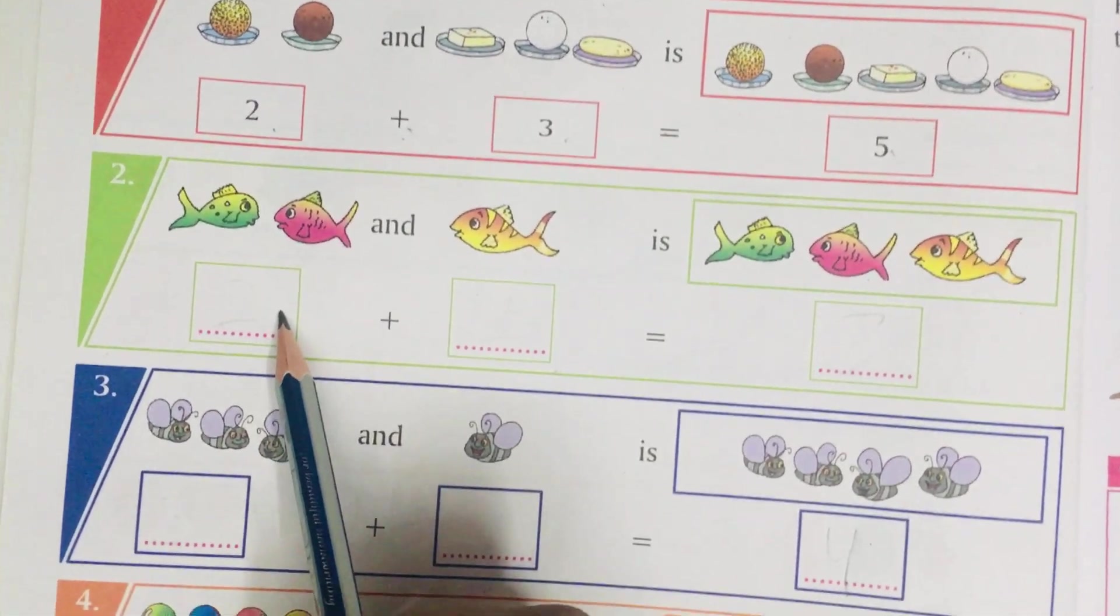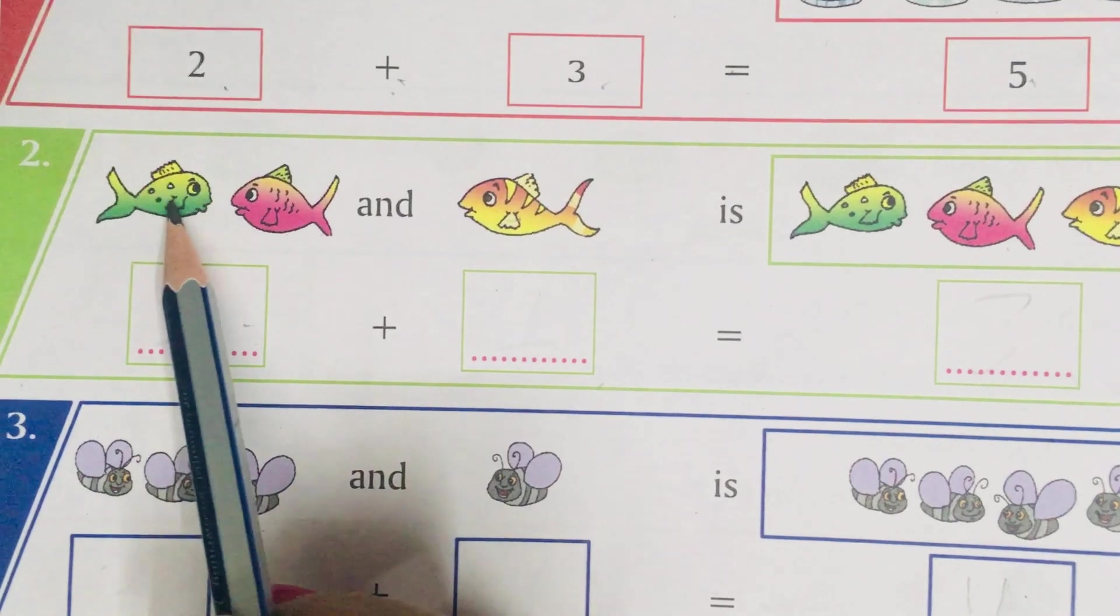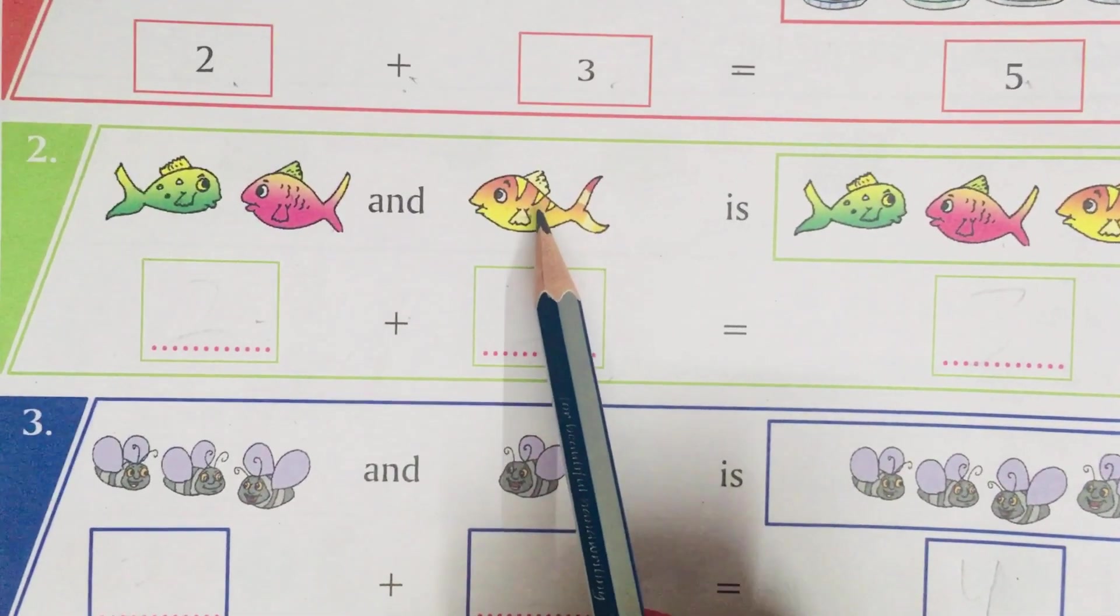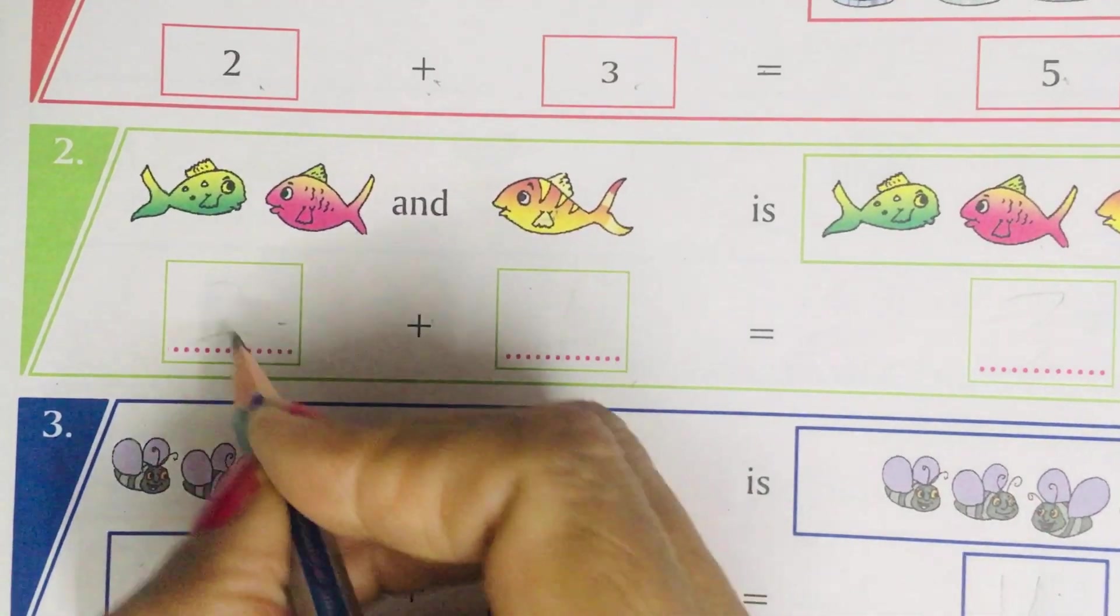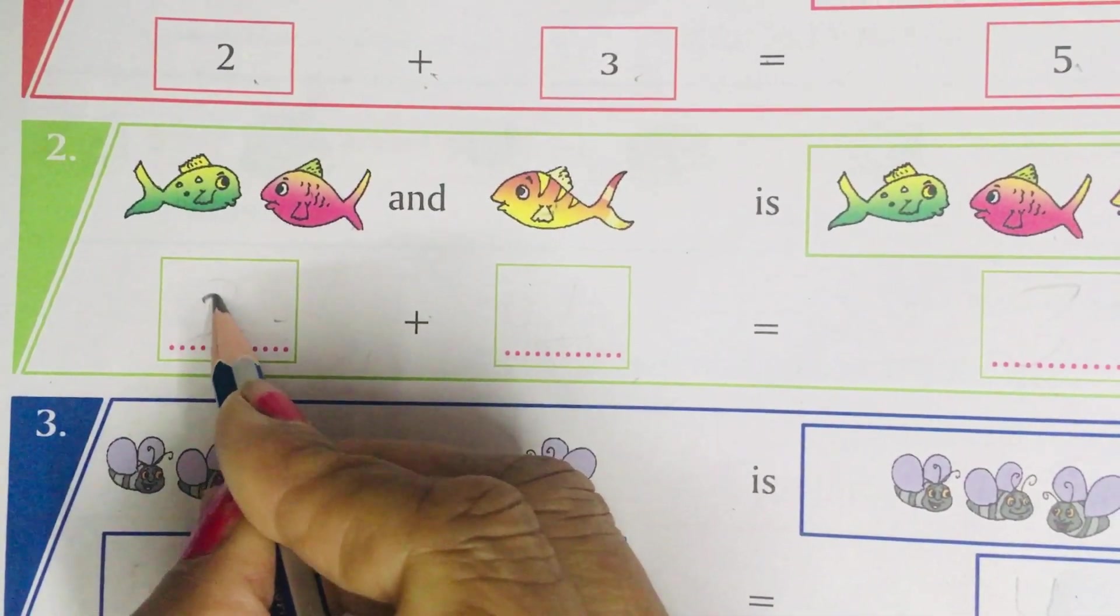Now, we will do the second sum. How many fishes are there? There are, count them, 1, 2. Plus, how many fish is there? 1. So, we will write, count them again, 1 and 2. We will write 2 over here.